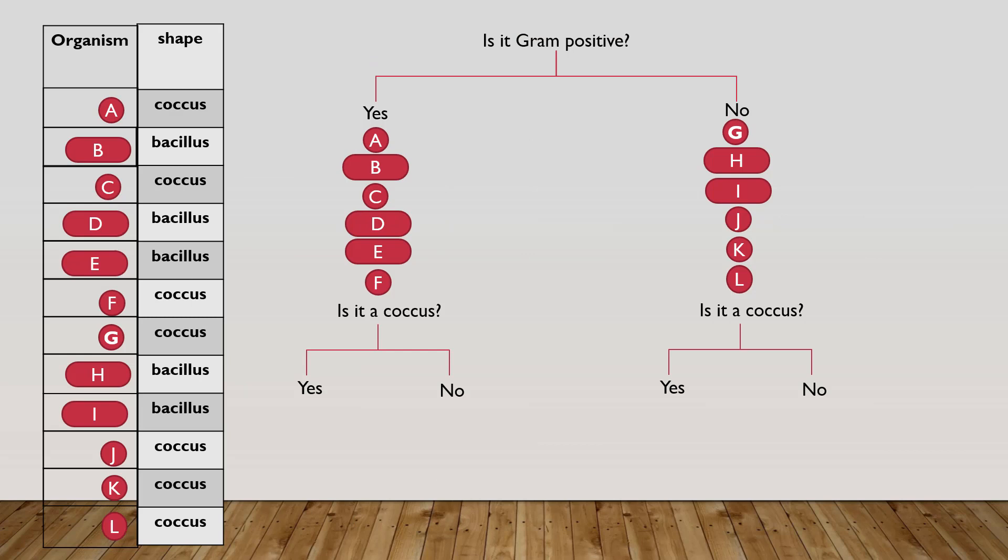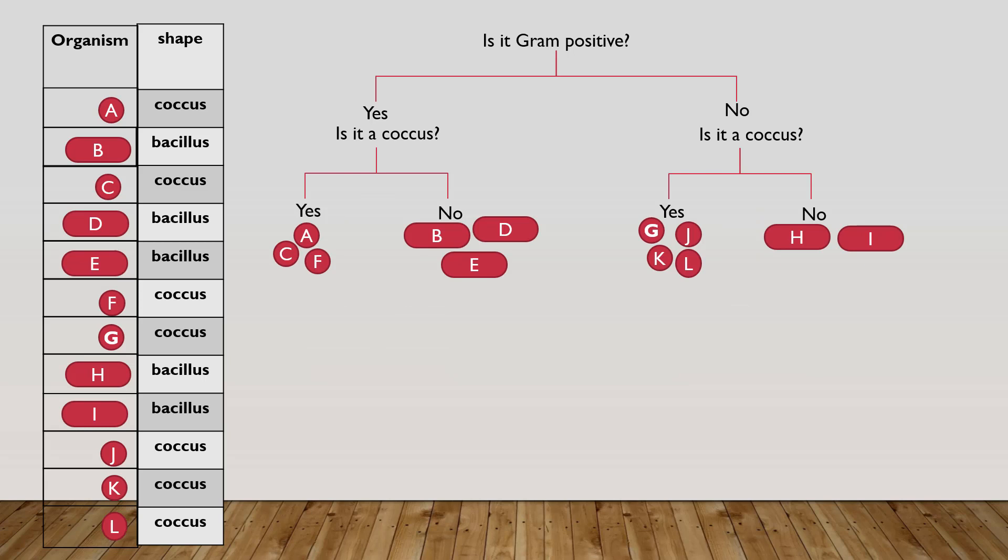Next, I can ask the question about shape. And by the way, you can ask the same question with both groups, as long as it helps separate the members within that group. So in this case, I've asked, is my bacterial unknown a coccus? Yes or no? This will further separate the bacteria into four smaller groups, as shown here.